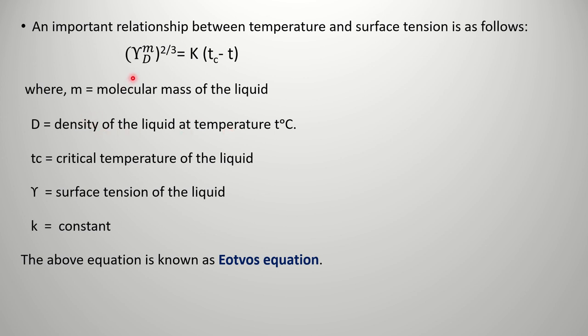Tc is the critical temperature of the liquid, gamma is surface tension of the liquid, and K is a constant. So we have the Eötvös equation, which relates temperature and surface tension of the liquid.